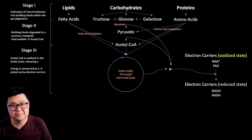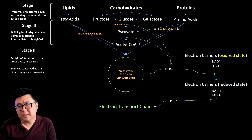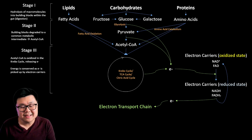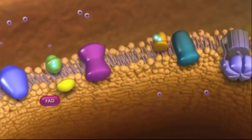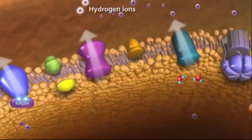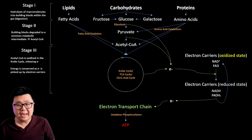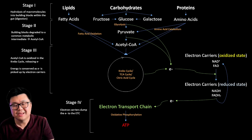In the fourth and final stage, the reduced electron carriers bring the electrons to the electron transport chain in the mitochondria and dump off the electrons — by doing so they themselves become oxidized and get recycled back into their oxidized state to repeat the cycle. The electrons in the electron transport chain undergo many steps we'll cover later, and eventually create ATP through a process called oxidative phosphorylation. And there we go — we have finally made ATP through the electron transport chain, wrapping up the process from inputs to outputs.